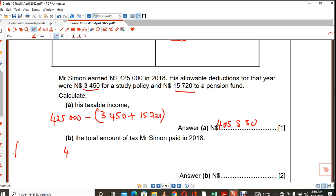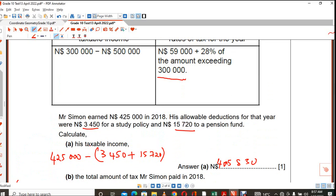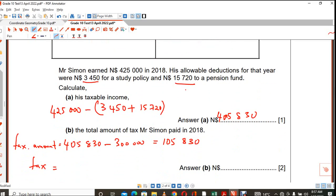So what you did in part A, you subtract first. So this is what we call taxable amount. So you take that 405,830. You subtract 300,000. That's the first thing you do before you use the formula. So you get 105,000. This is the amount that the person must be taxed. Not everything. But what is the formula? So the formula is, if you go back, it must be 59,000, right? Plus 28% of that amount that you've worked out.